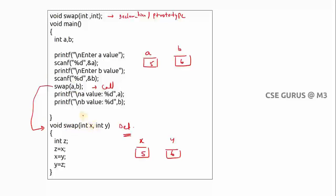When it calls the definition, void swap(int x, int y), x takes the first parameter which is a, so x equals 5. Y takes the second parameter b, so y equals 6. X and y are called formal parameters. Now it executes: int z = x, so z becomes 5. Then x = y, so x becomes 6. Then y = z, so y becomes 5. This program is intended to swap two numbers.